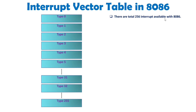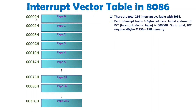Each of these interrupt types has a well-defined memory location. It starts from address 0000h, and each type holds 4 bytes of address. So the next type starts from 4h, the next from 8h, then Ch, then 10h in hexadecimal. That is how each type holds 4 bytes of address.